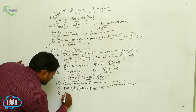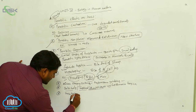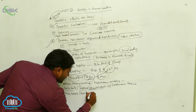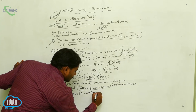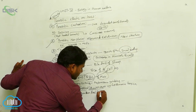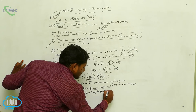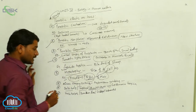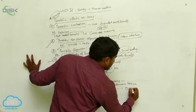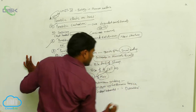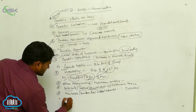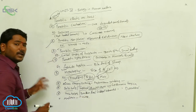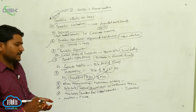Kala azar, Dum-dum fever, and Visceral Leishmaniasis are caused by Leishmania donovani. Malaria is caused by Plasmodium vivax. Filariasis is caused by Wuchereria bancrofti.